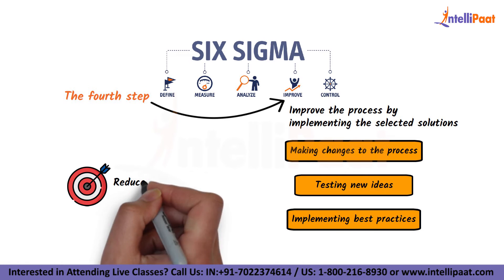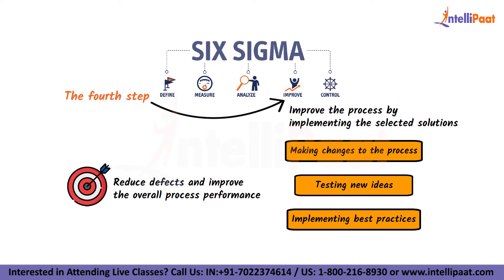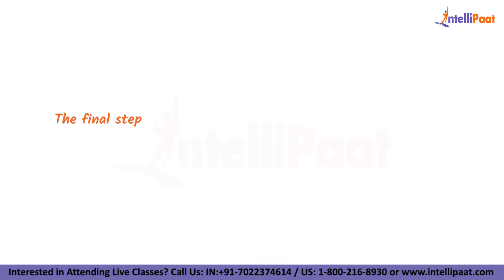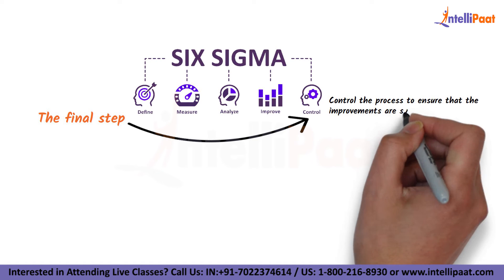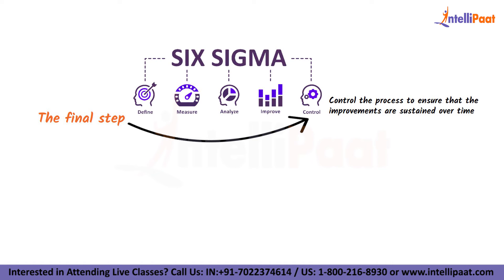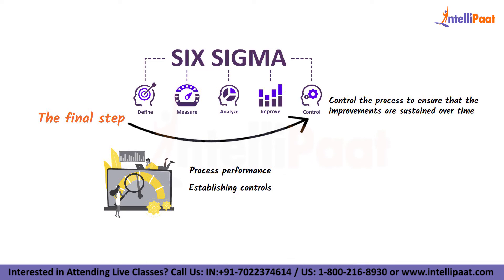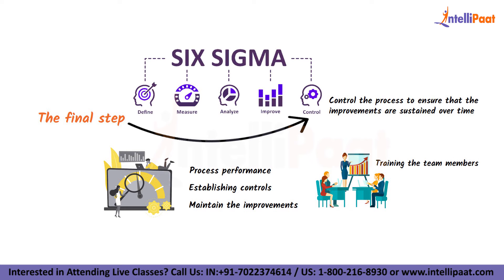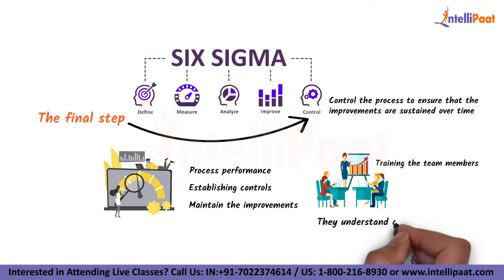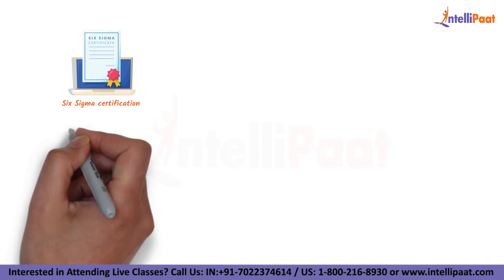The goal here is to reduce defects and improve the overall process performance. The final step is to control the process to ensure that the improvements are sustained over time. This involves monitoring the process performance, establishing controls and procedures to maintain the improvements, and training team members to ensure they understand and can maintain the new process.